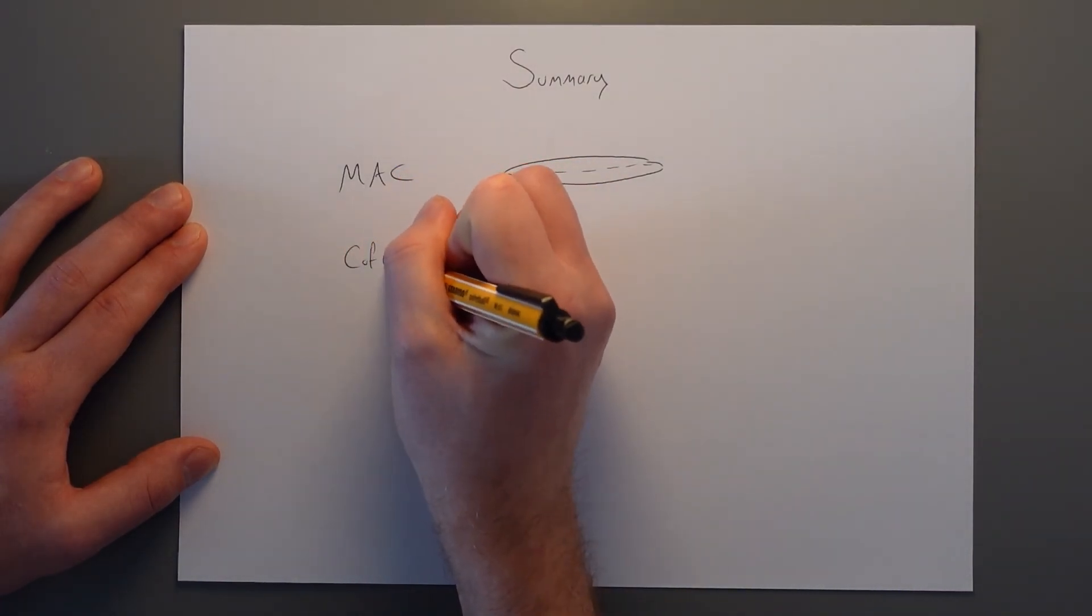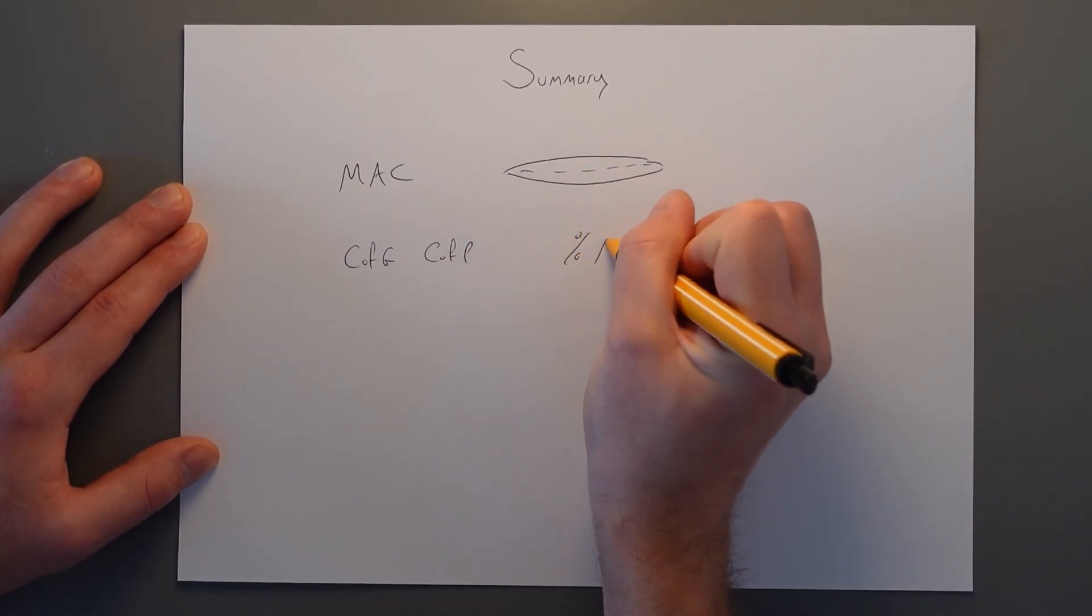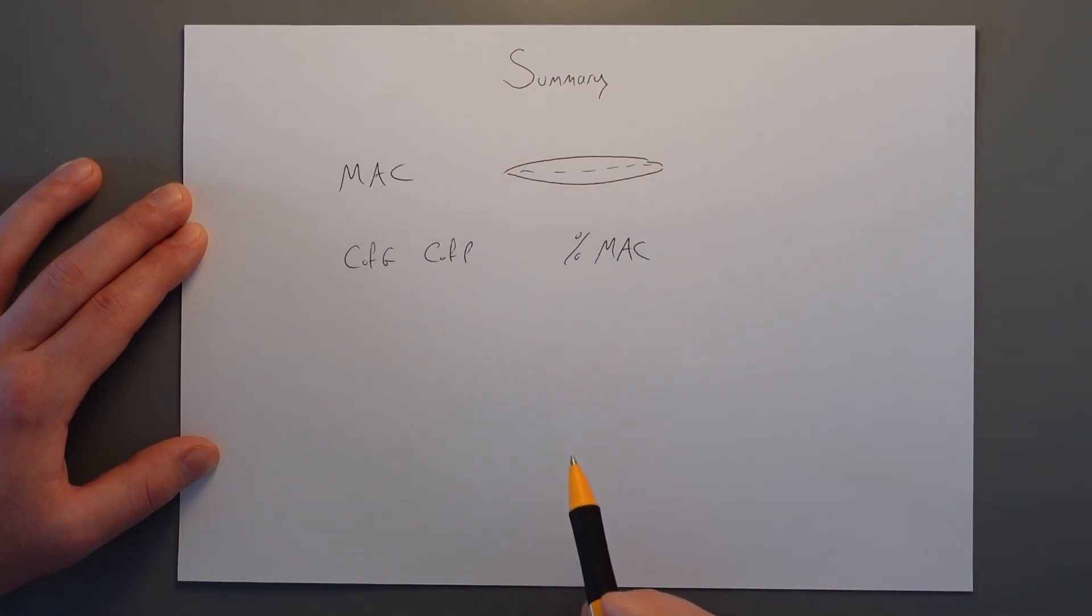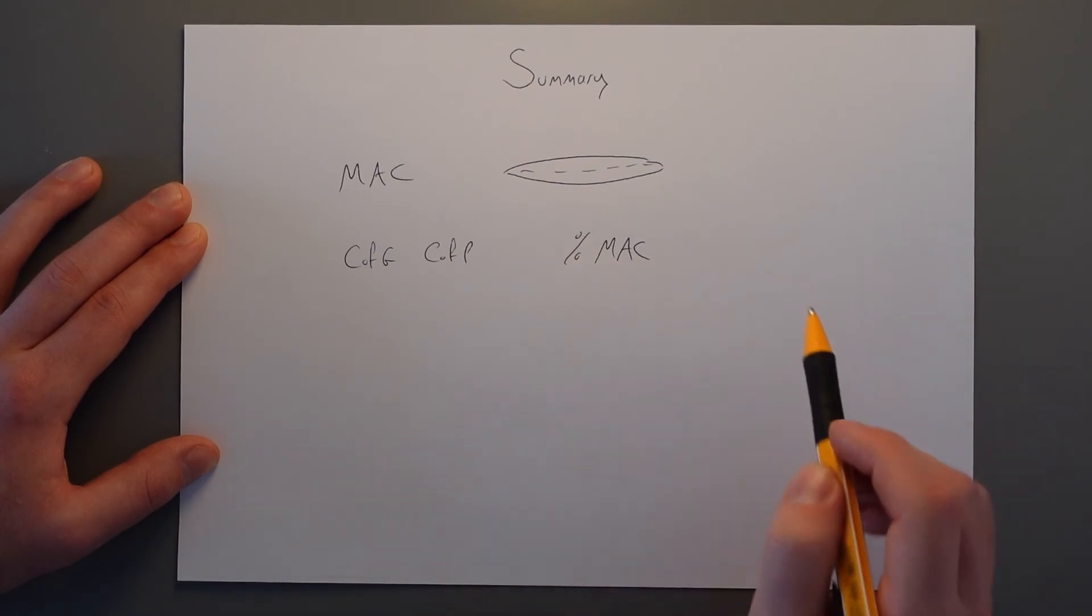C of G and centre of pressure are described as a percentage of MAC. You find out that percentage using the standard method for finding out percentages. You take the smaller number, divide it by the bigger number, multiply it by 100.